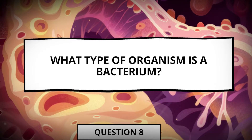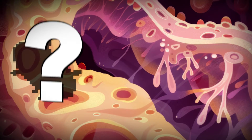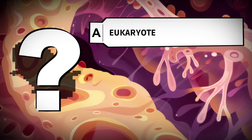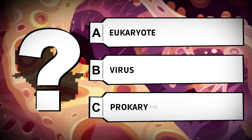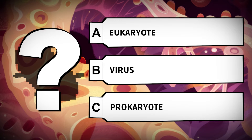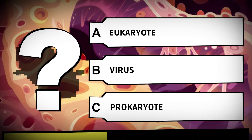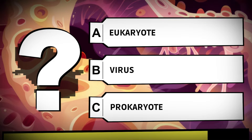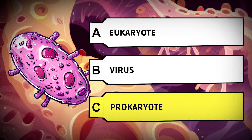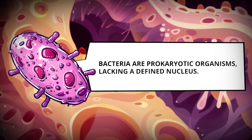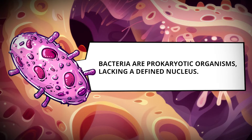What type of organism is a bacterium? Eukaryote, virus, prokaryote. Bacteria are prokaryotic organisms, lacking a defined nucleus.